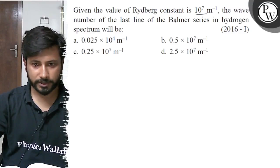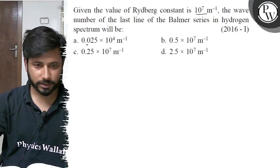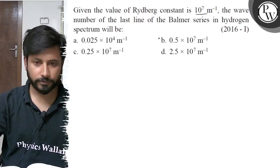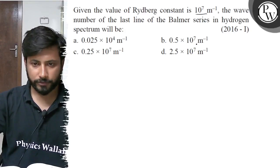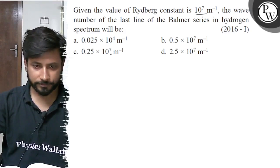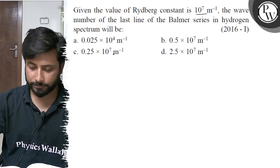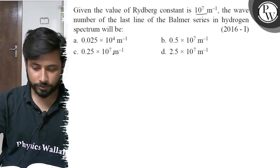Option A is 0.025 × 10^4 per meter. Option B is 0.5 × 10^7 per meter. Option C is 0.25 × 10^7 per meter.